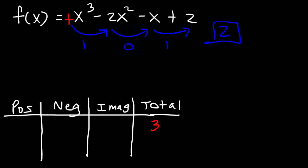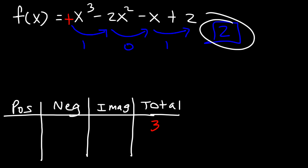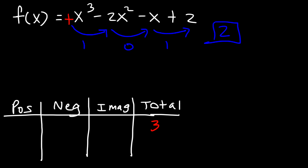According to Descartes' rule of signs, the number of positive real zeros is either equal to the number of sign changes for f(x), or it could be less than that by a positive even integer. So one possible answer is 2, and 2 minus 2 is 0. So the number of positive real zeros is either 2 or 0.